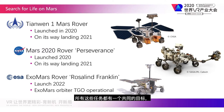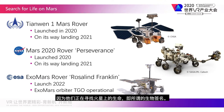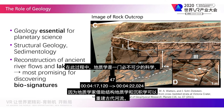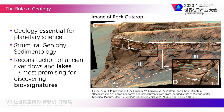All of these missions have one common objective: they are looking for life on Mars — so-called biosignatures. In this endeavor, geology is an essential science, as geologists, with the help of structural geology and sedimentology, can reconstruct ancient river flows.